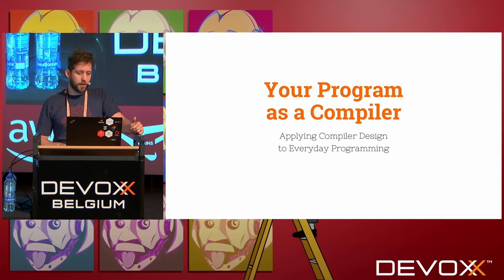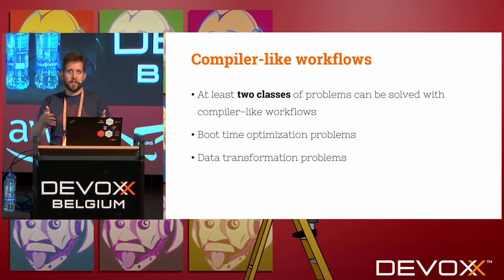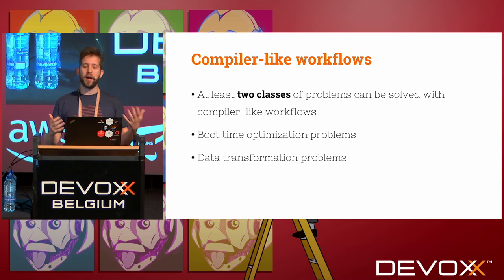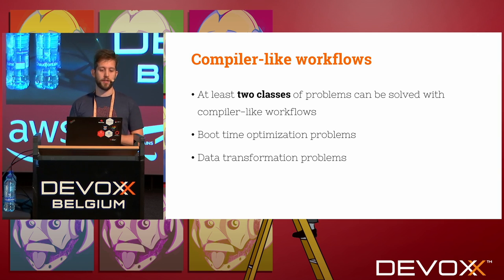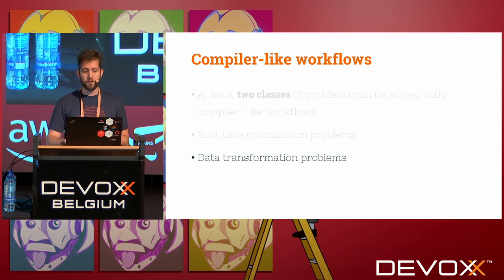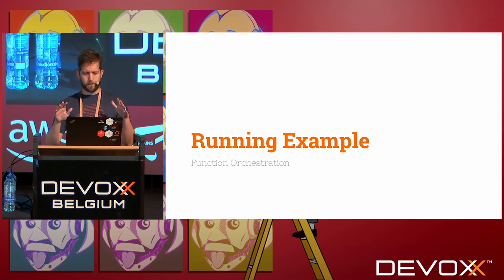So, what can you solve with compiler-like workflows? I believe there are at least two classes of problems: boot time optimization problems — the kind you solve with Quarkus — and data transformation problems. I want to focus on data transformation, which includes mapping configuration keys into structured data, or transforming a Spark job into an execution plan.